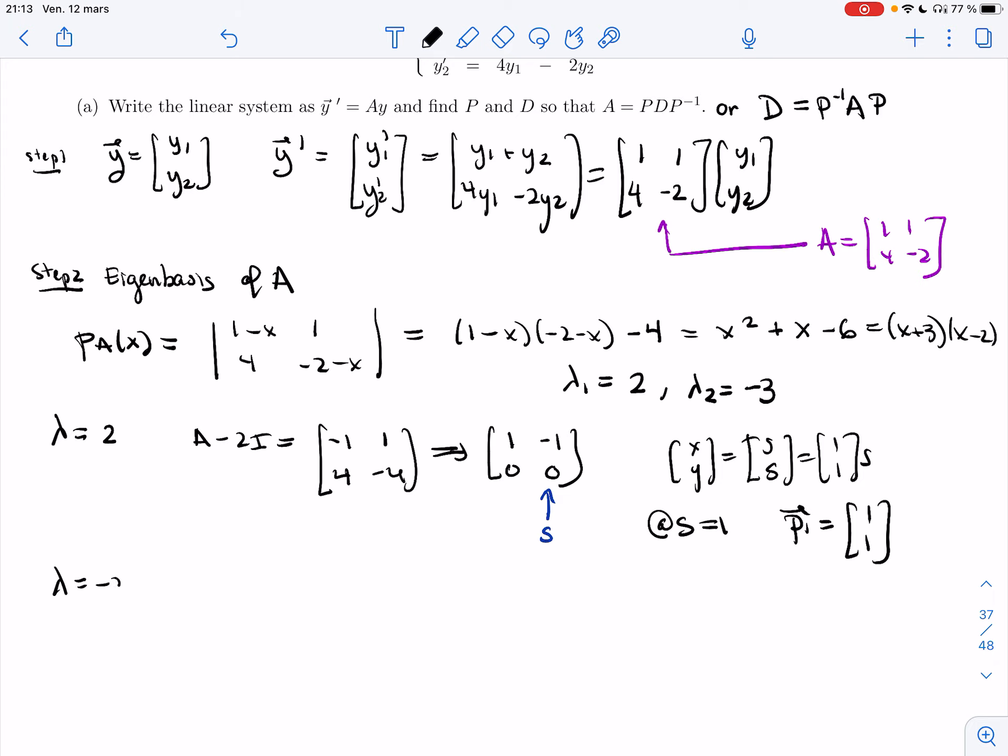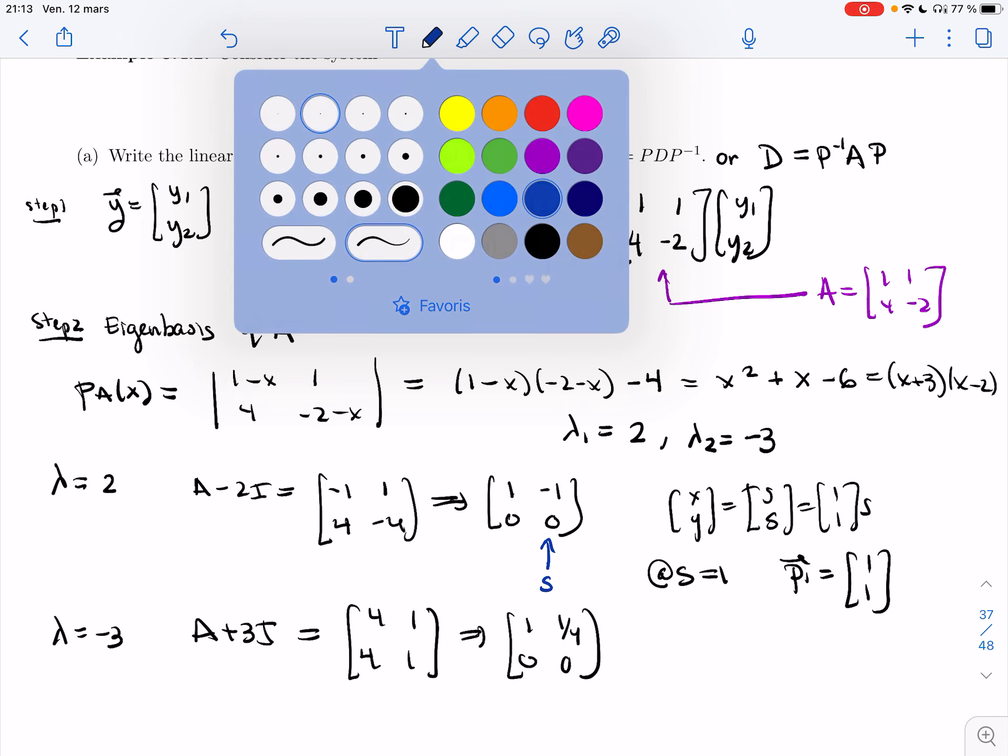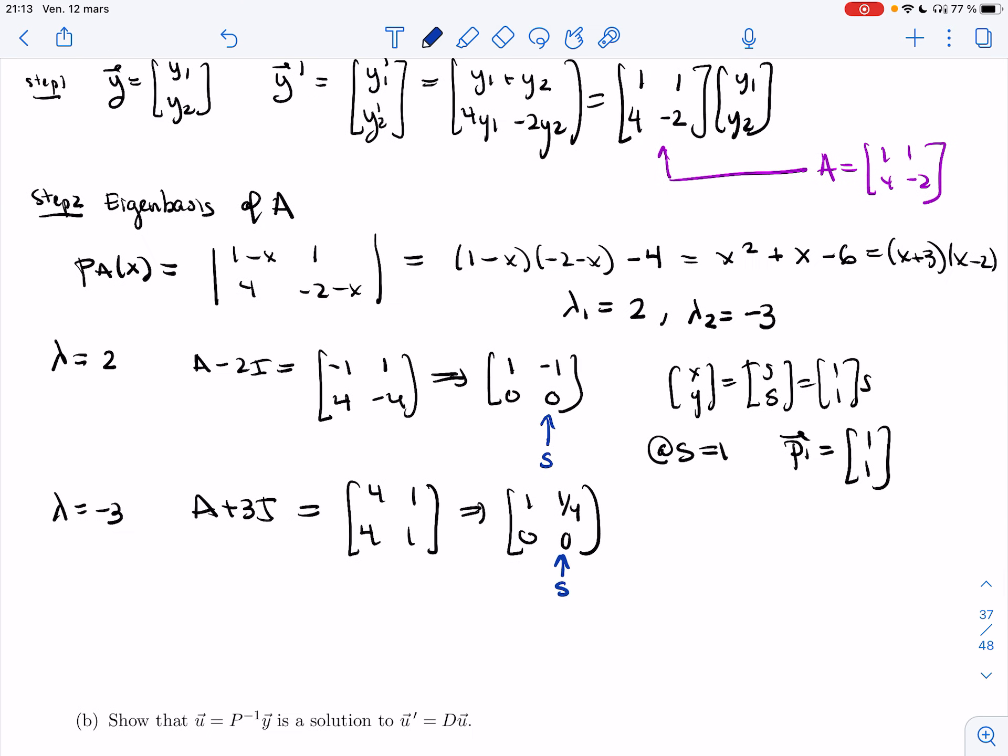Let's try minus 3. I get A plus 3I. That's going to be 4, 1, 4, 1. Good. It looks redundant. I get 1, 1/4, 0, 0. If I get s here, I'm going to get x, y, which is minus 1/4, s. And so at s equals, let me take, I'll take 4. I'll get that p2 is minus 1, 4.